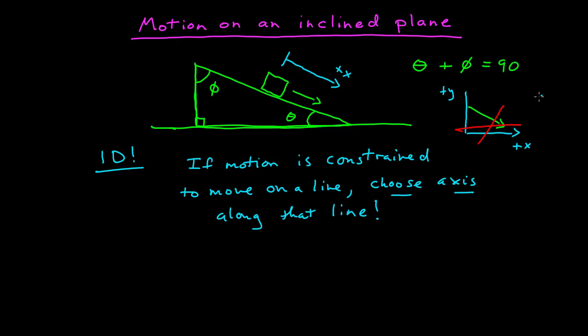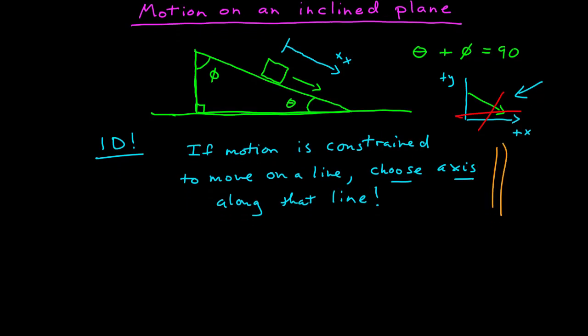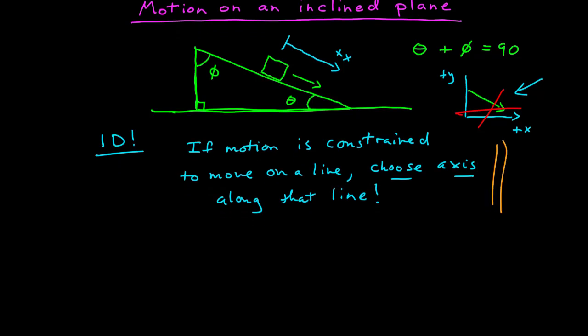If you do all the physics correctly, you will still get the right answer by choosing this coordinate system. However, all coordinate systems are not created equal when it comes to the simplicity in which you can solve the problem. In motion of an inclined plane, what is the acceleration of that object?